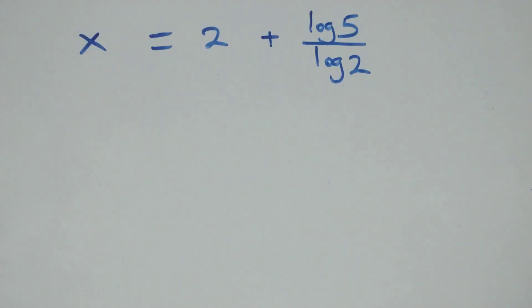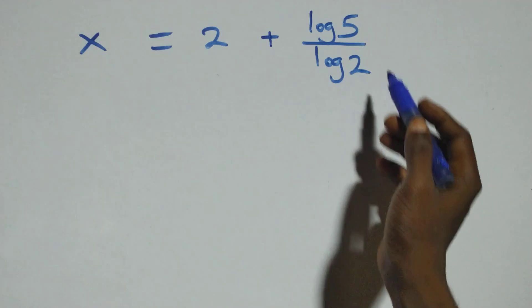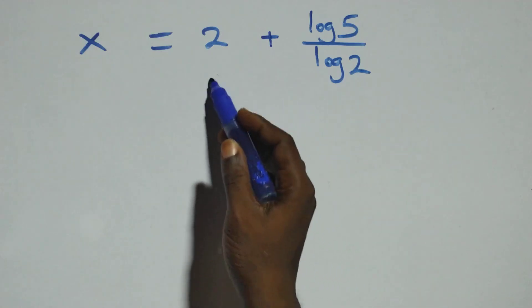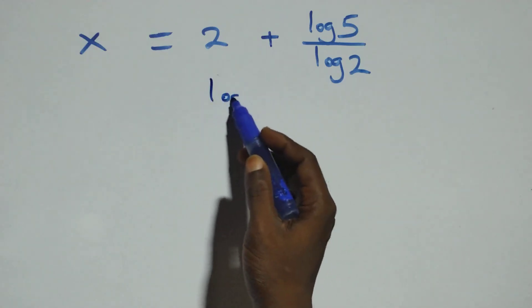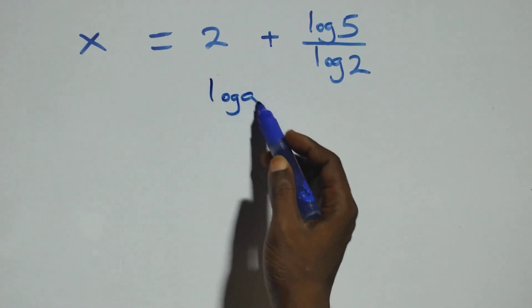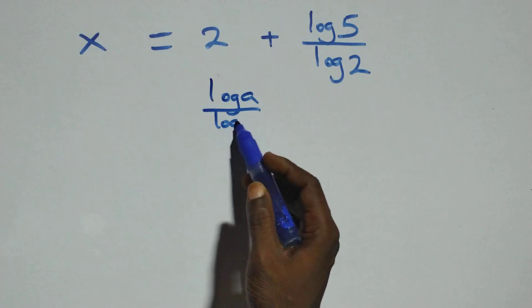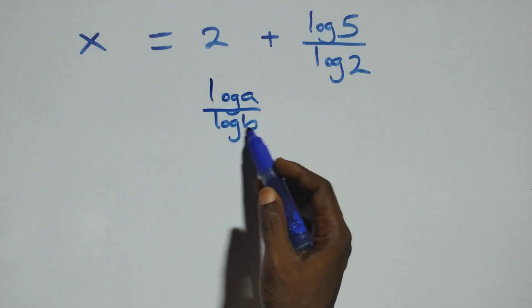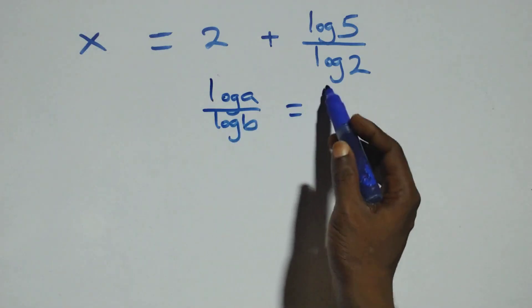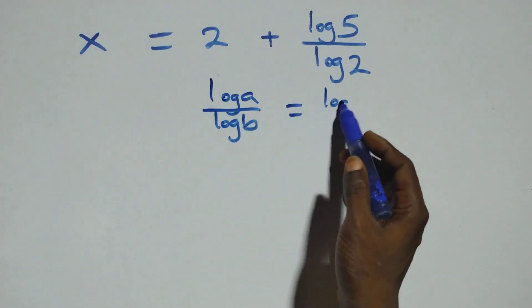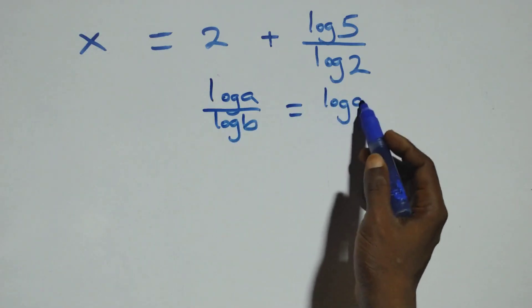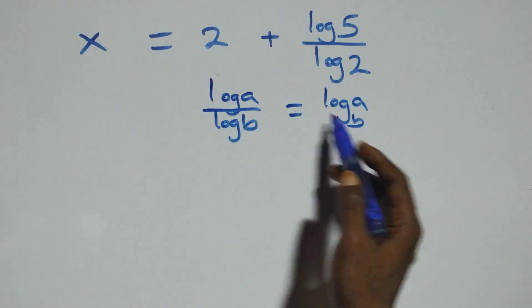We apply the change of base formula: log a over log b is the same as log of a to base b. Therefore x equals 2 plus log base 2 of 5.